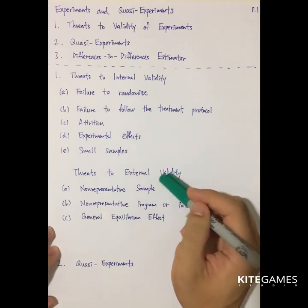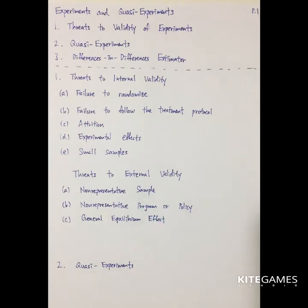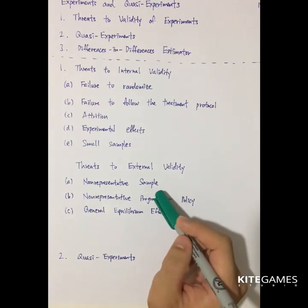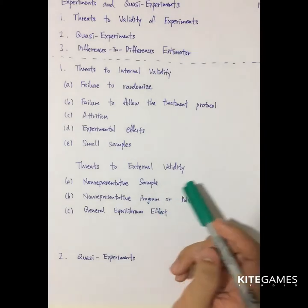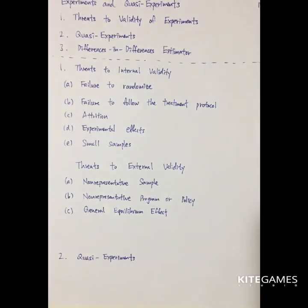There are also some threats to external validity — that means the results of this population may not represent other populations. First, there may be non-representative samples. For example, if you are looking at the height of students but you select your sample only from the basketball team, the basketball team cannot represent the whole population or even other populations. Second is non-representative programs or policies — some policy implemented in one region may not be applicable in other regions, as there may be differences across various places.